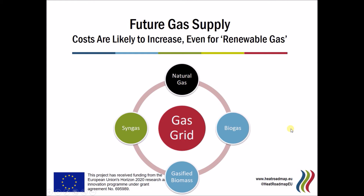One thing about the future that is very clear right now is that natural gas is very unlikely to get cheaper in the very long term. Maybe there will be short-term decreases due to shortages in demand, but over the very long term it's very likely to increase. Natural gas itself is a finite resource, so at some point that finite resource will become less and less and the price will increase. If we turn to other sources of gas such as biogas, gasified biomass, or synthetic gas — often referred to as power to gas — all of these alternative options are also very expensive. There are no cheap alternatives for the gas supply currently available.